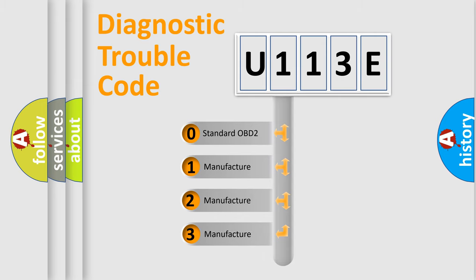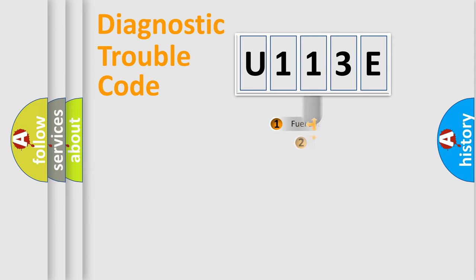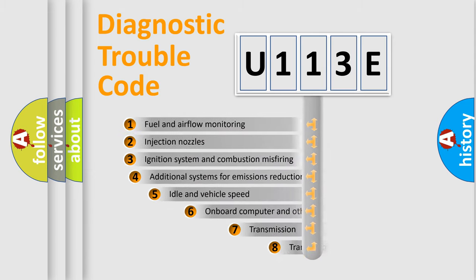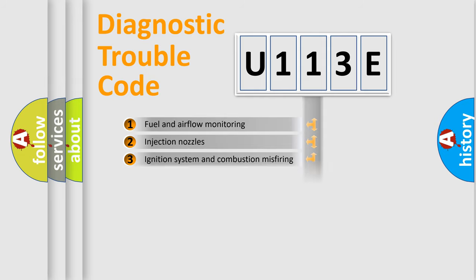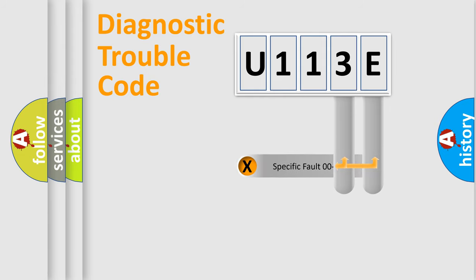If the second character is expressed as zero, it is a standardized error. In the case of numbers 1, 2, 3, it is a manufacturer-specific error. The third character specifies a subset of errors. The distribution shown is valid only for the standardized DTC code. Only the last two characters define the specific fault of the group.